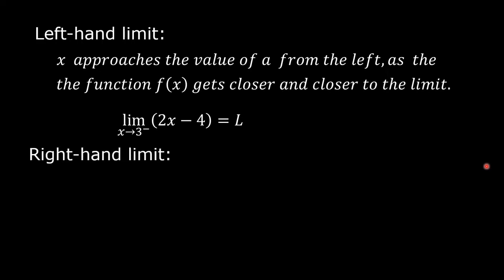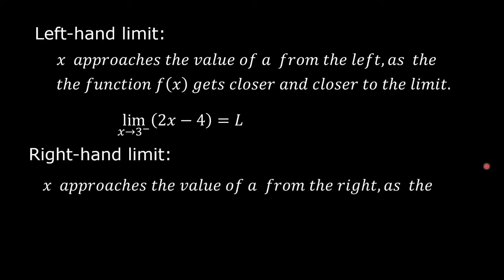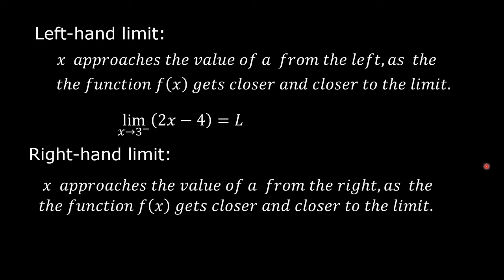Right-Hand Limit: x approaches the value of a from the right as the function f of x gets closer and closer to the limit. For example, the limit of the quantity 2x minus 4 as x approaches 3 from the right. The positive sign above and to the right of 3 means from the right.